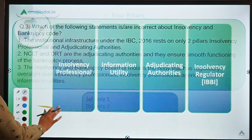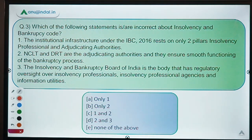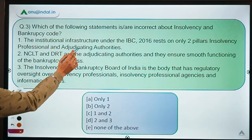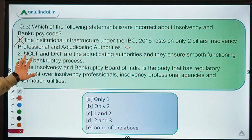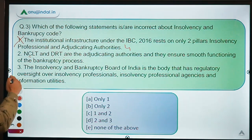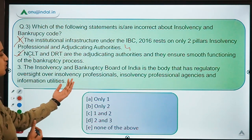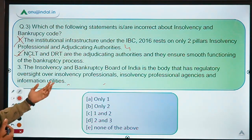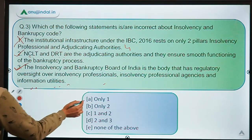Moving back to the question — we have to identify the incorrect statement. Statement one says the institutional infrastructure under IBC rests on only two pillars: insolvency professionals and adjudicating authorities. This is wrong — we just discussed four pillars. Statement two says NCLT and DRT are the adjudicating authorities ensuring smooth functioning of the bankruptcy process — this is absolutely correct. Statement three says IBBI has regulatory oversight over insolvency professionals, insolvency professional agencies, and information utilities — also correct. So only the first statement is incorrect. The answer is option A.